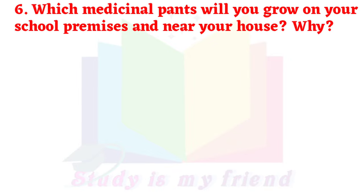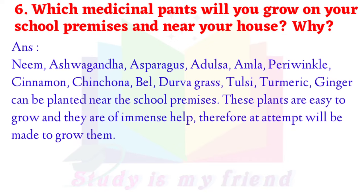Question 6: Which medicinal plants will you grow on your school premises and near your house? Why? Answer: Neem, Ashwagandha, Asparagus, Adulsa, Amla, Periwinkle, Cinnamon, Chinchona, Bel, Durva grass, Tulsi, Turmeric and Ginger can be planted near the school premises. These plants are easy to grow and they are of immense health benefit. Therefore, an attempt will be made to grow them.